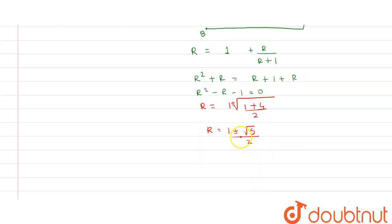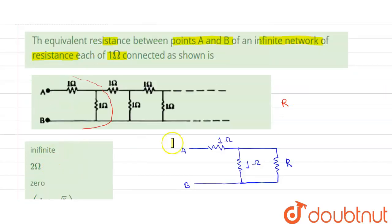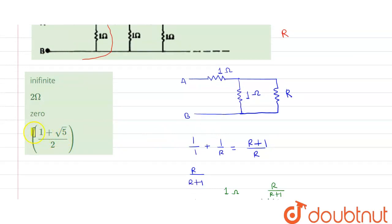Now here R cannot be negative. So we have R equal to 1 plus under root of 5 upon 2. That is why option 4 is the right answer.